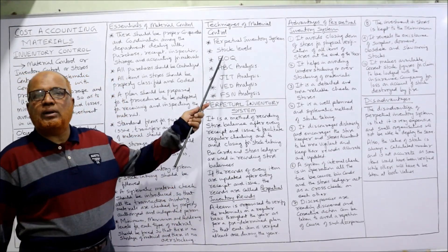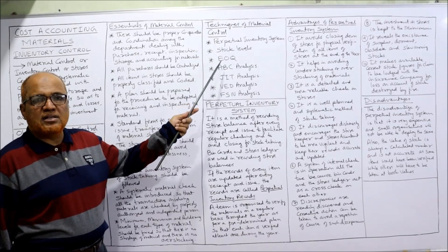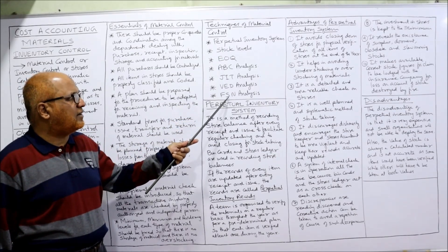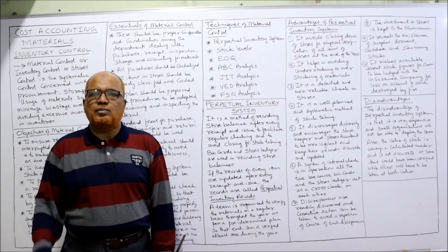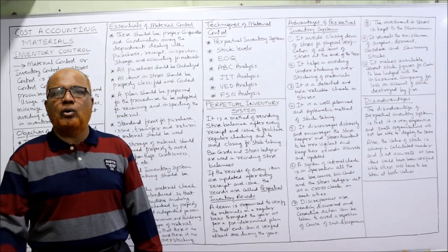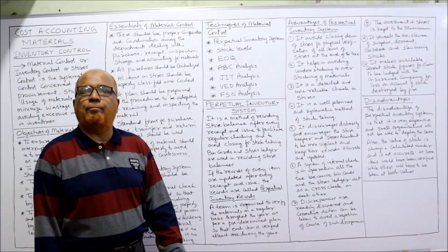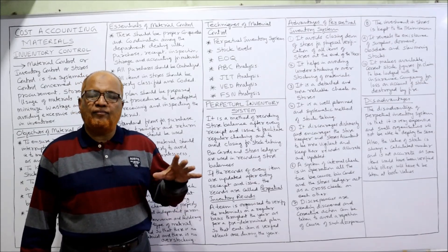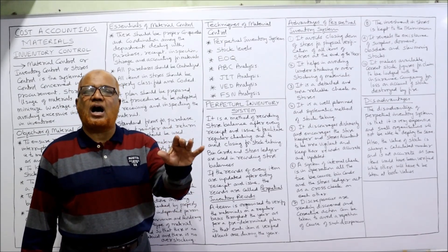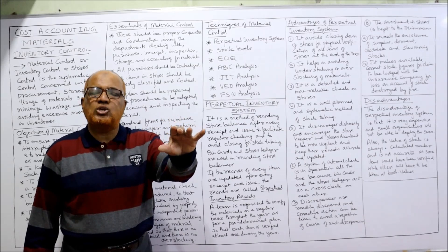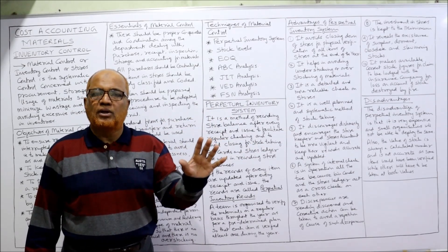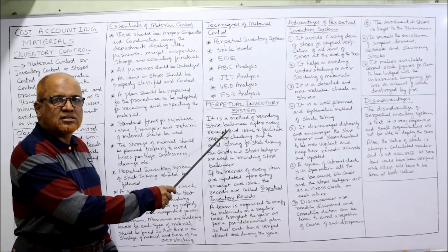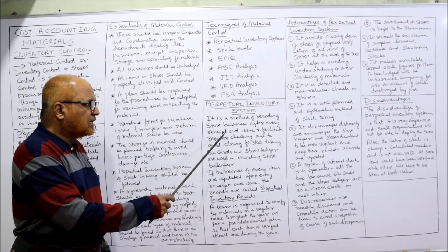The techniques of inventory control include: perpetual inventory system, stock levels, EOQ, ABC analysis, JIT, VED, and FSNA analysis. In this video I am going to explain only the first technique — the perpetual inventory system — which is very frequently asked in examinations. It is a method of recording store balances after every receipt and issue, to facilitate regular checking and to avoid closing of stores for stock taking.